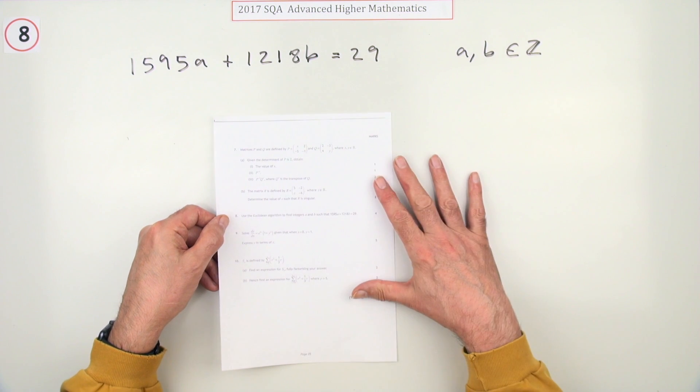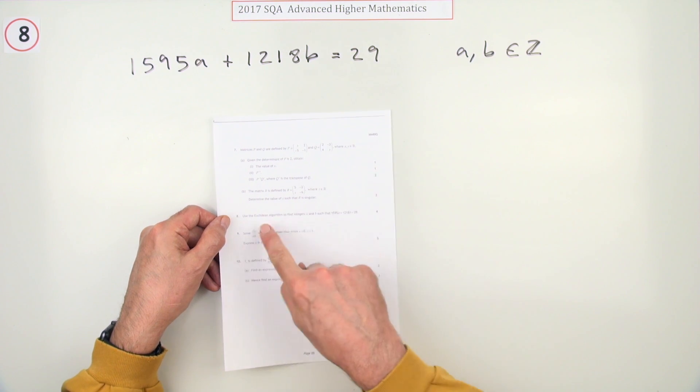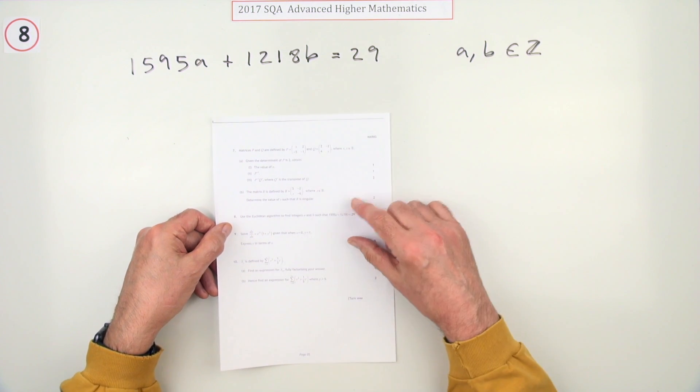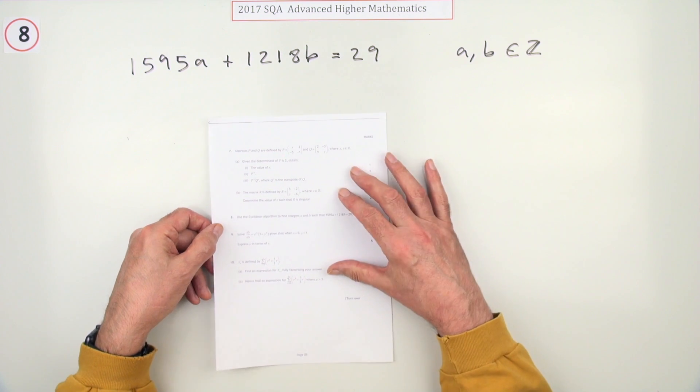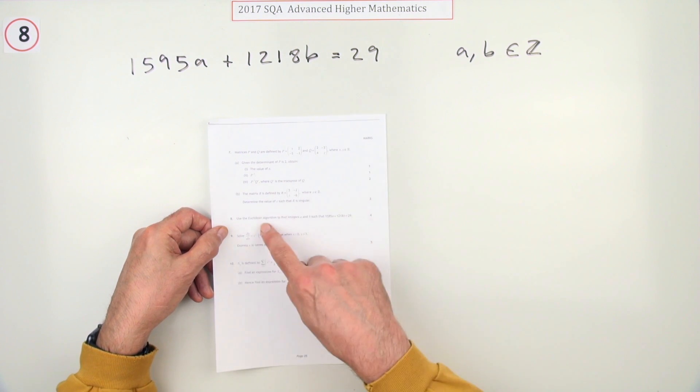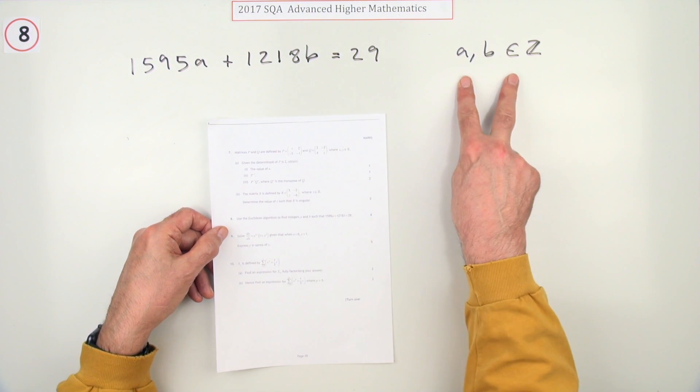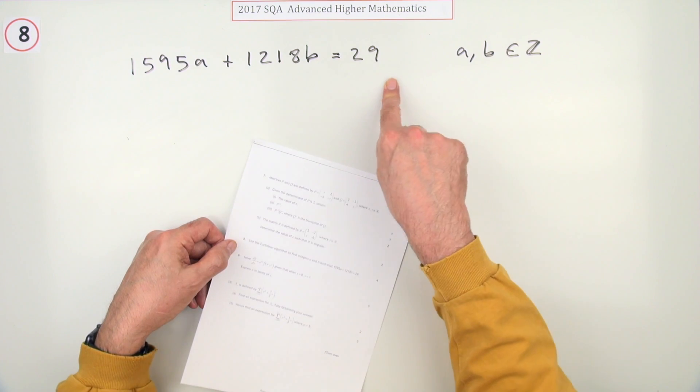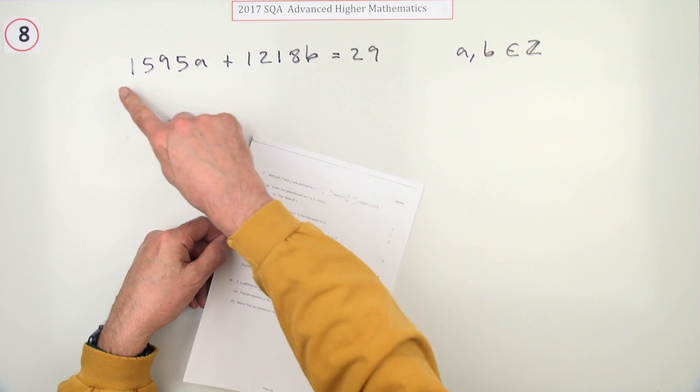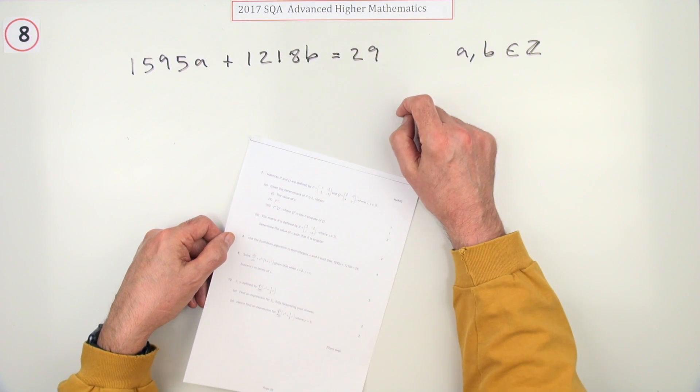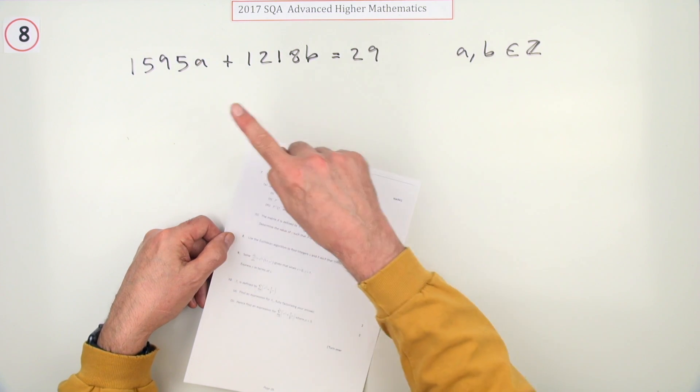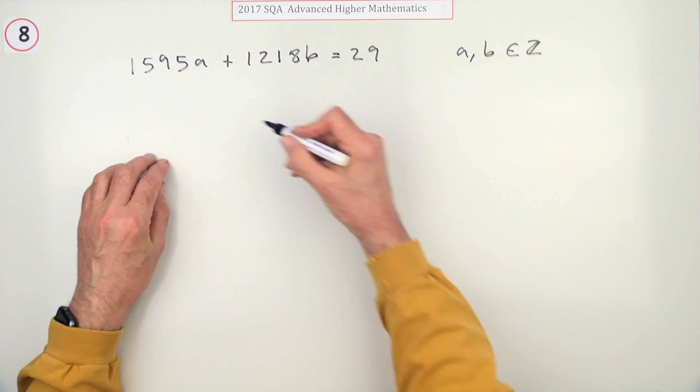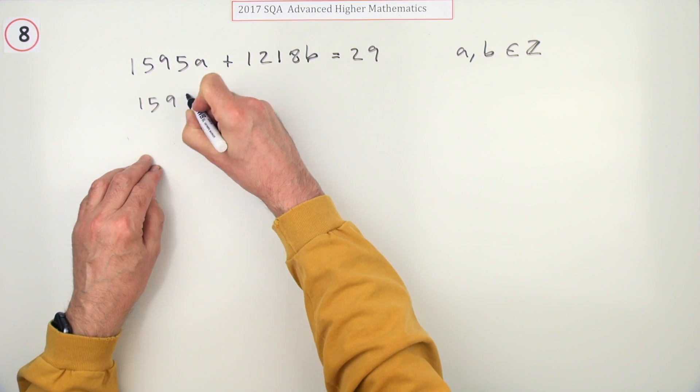Number eight from the 2017 Advanced Higher Maths. We've got the Euclidean algorithm for four marks - a bit of a plod, but usually it's a kind of guaranteed four marks, isn't it? Use the algorithm to find integers a and b that solve this equation. This is what's called a Diophantine equation, which is really just an ordinary linear equation where you're only interested in solutions which are integers.